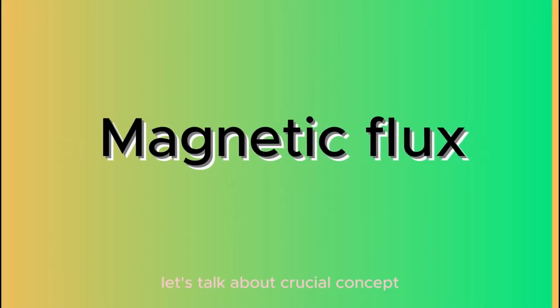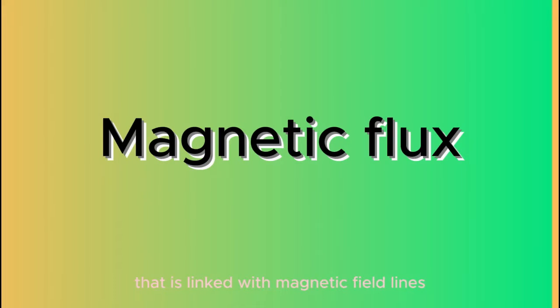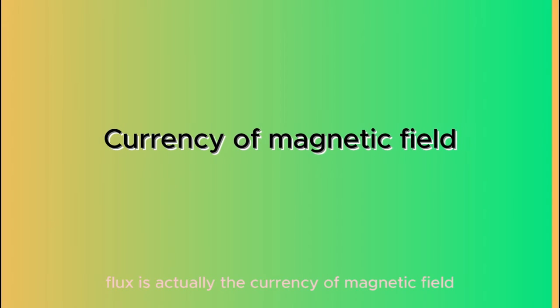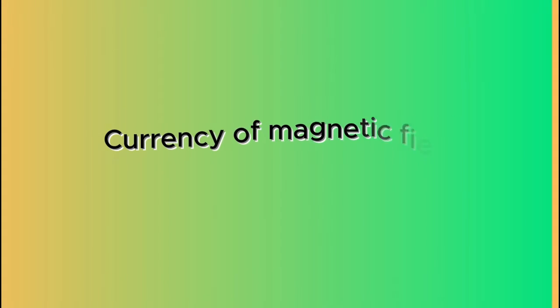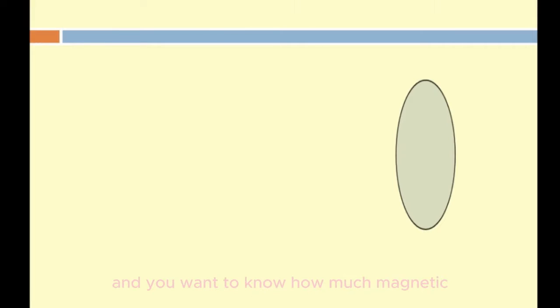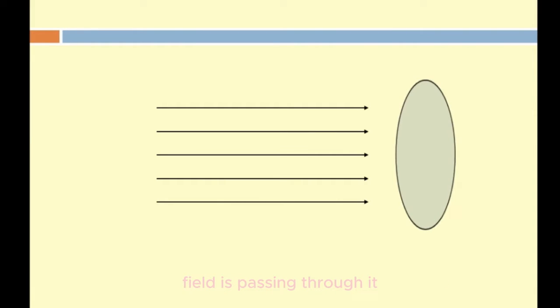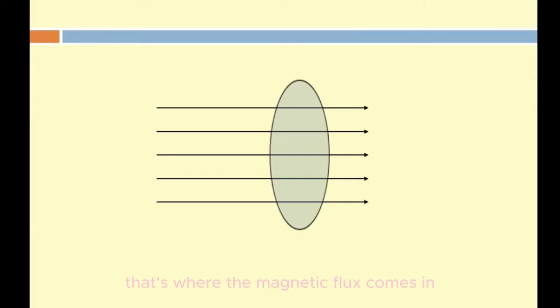Now, let's talk about a crucial concept that is linked with magnetic field lines. That's called the magnetic flux. Magnetic flux is actually the currency of a magnetic field. Imagine you have a coil of wire, and you want to know how much magnetic field is passing through it. That's where the magnetic flux comes in.